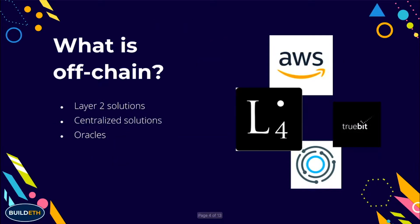What is off-chain? There are many different components. There are solutions like L4, Plasma, and Truebit that kind of solve that. We also have centralized solutions like AWS and Google App Engine, where you have control over the server and can run whatever computation you want. And lastly, we have Oracles, which connect the centralized server with decentralized smart contracts, allowing smart contracts to request data from any off-chain source.